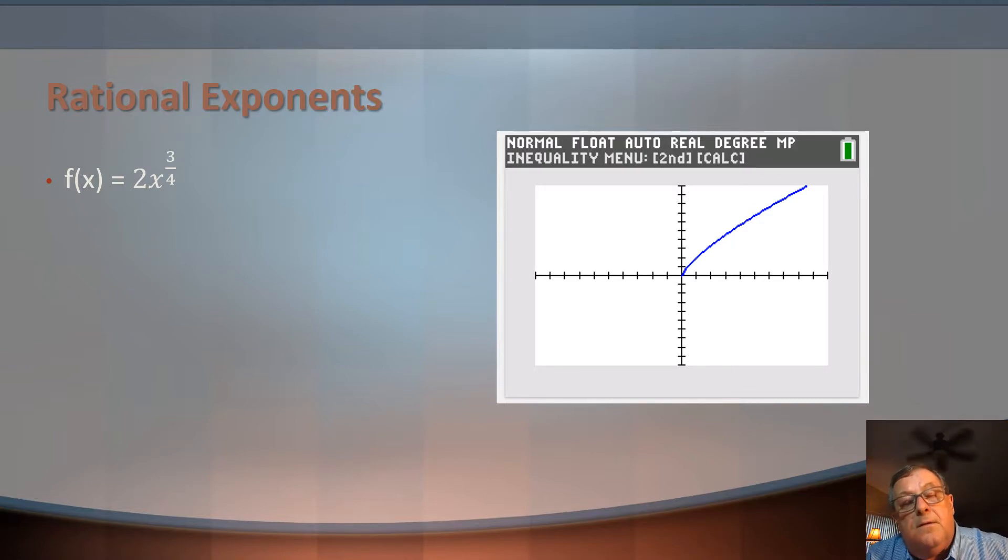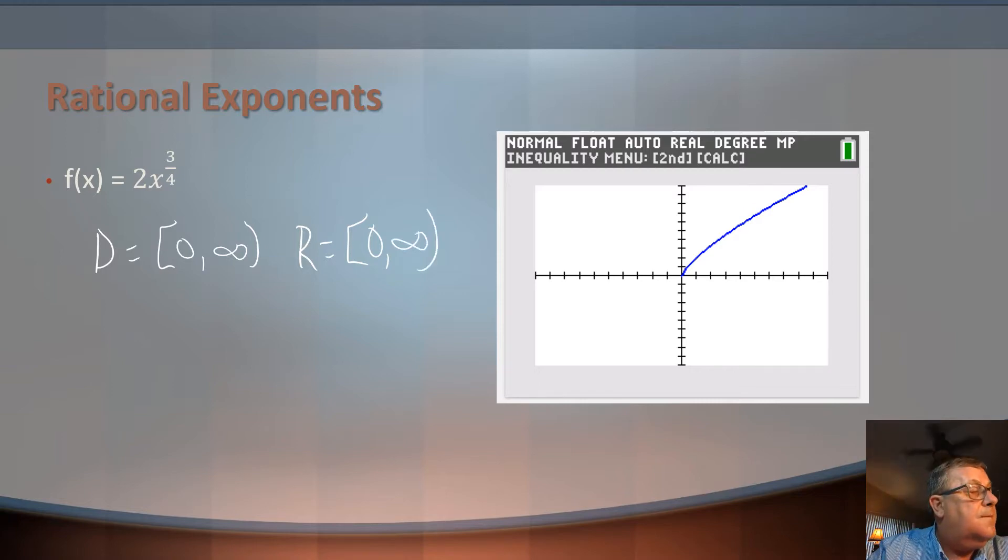When I look at the domain, well, the domain looks like it is equal to and would include 0 out to infinity. And the range also, I don't see anything below 0, so it would also be 0 out to infinity. And intercept, well, we've got an intercept at the origin. So both the y and x intercepts are at 0.